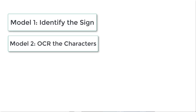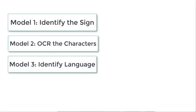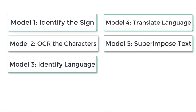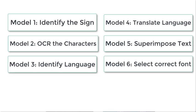Or maybe a third model to detect the language and a fourth model to translate the sign, and a fifth model to superimpose the translated text, perhaps even a sixth model to select the font to use.